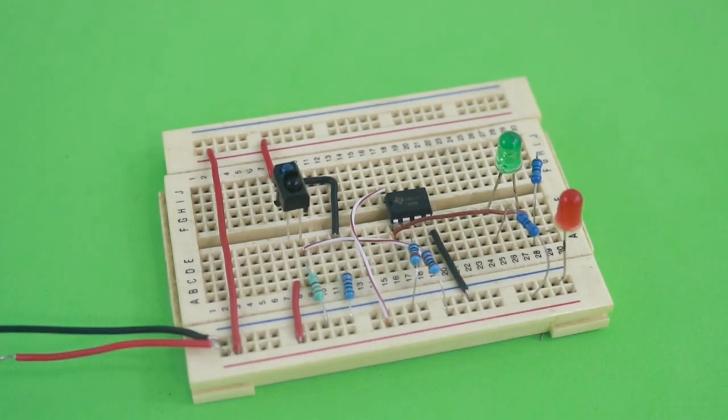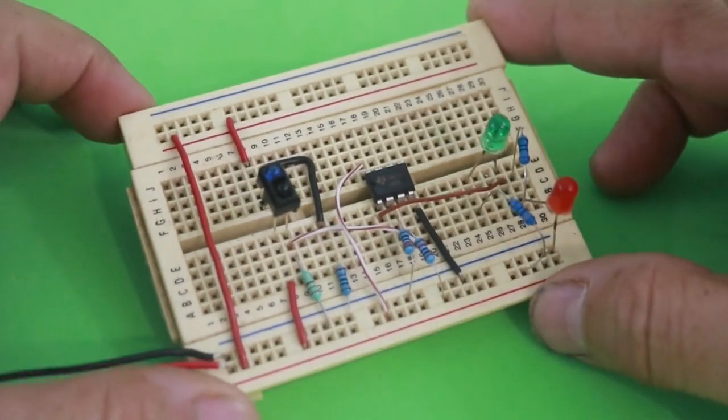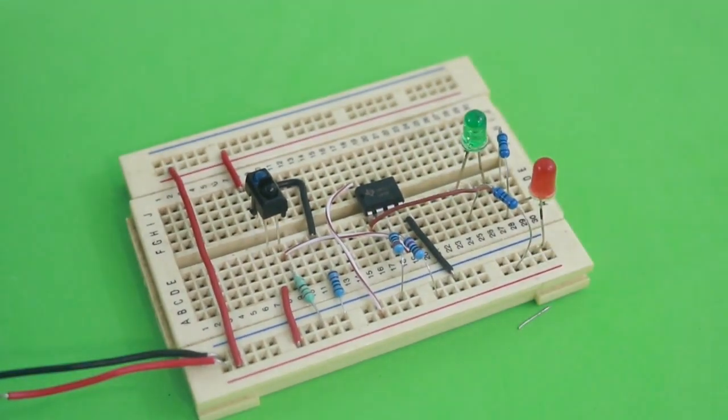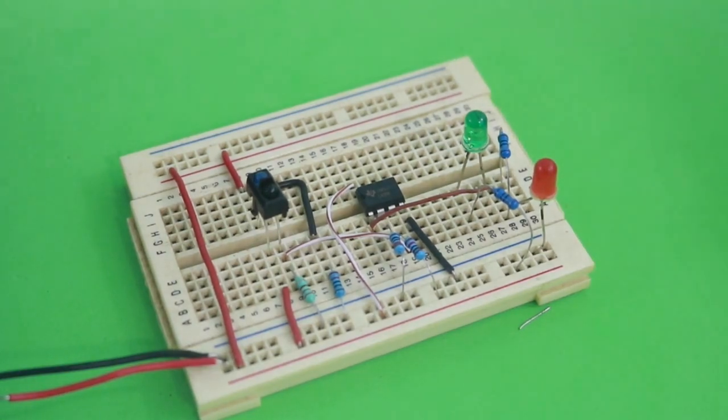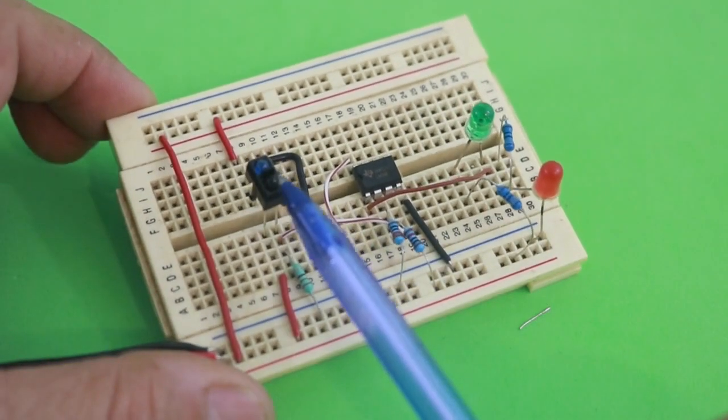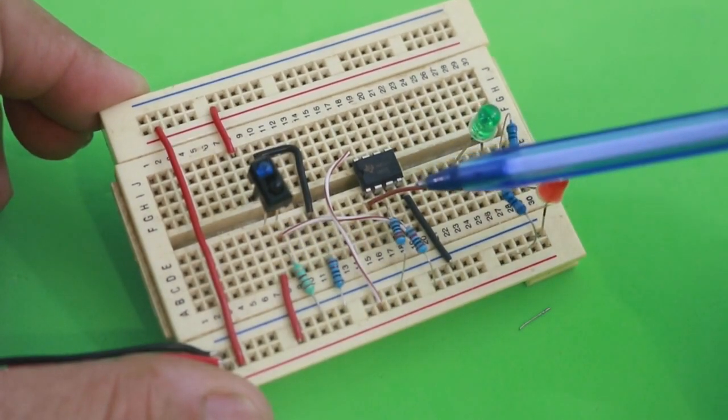Hello, welcome to Ludic Science. In this video I will show you this simple proximity detector circuit which turns on an LED or the other depending on the position of the object. It is based on the TCRT5000 sensor and an operational amplifier.